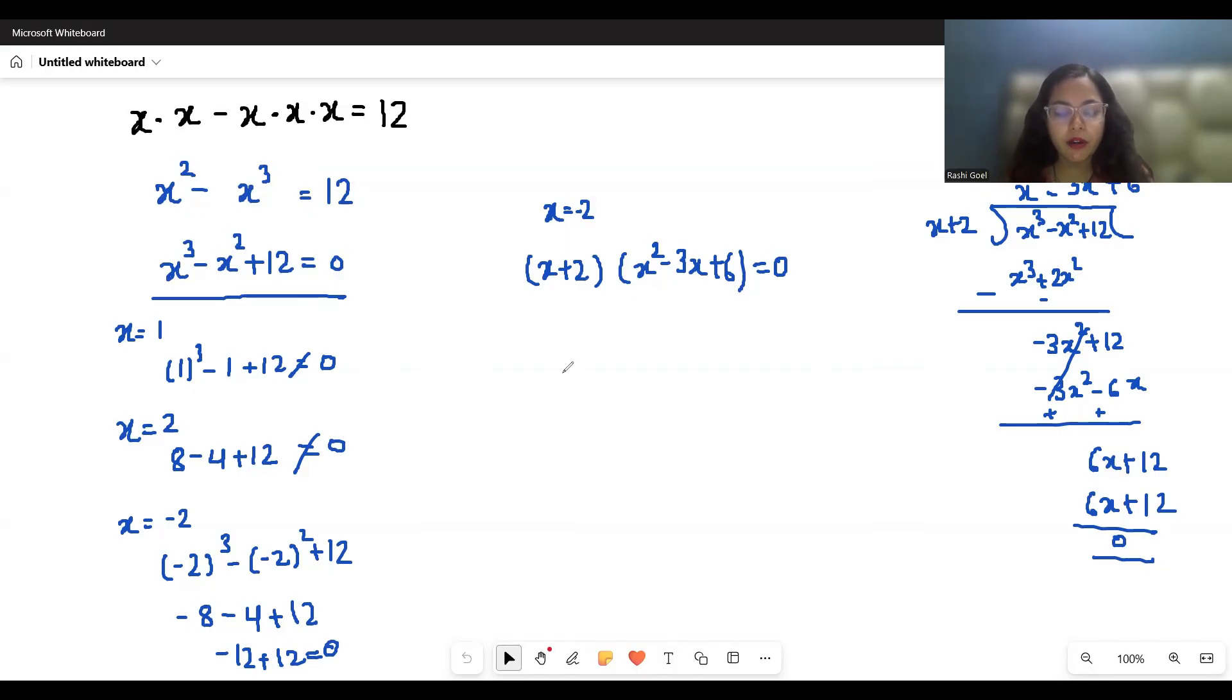Now solve the quadratic part. First, x plus 2 equals 0, so x equals minus 2. And here x squared minus 3x plus 6 equals 0.